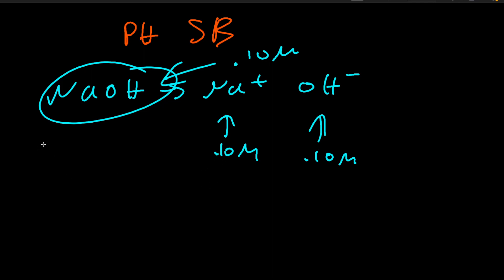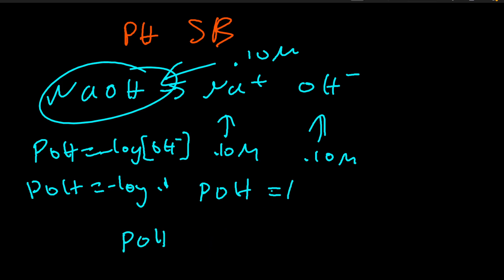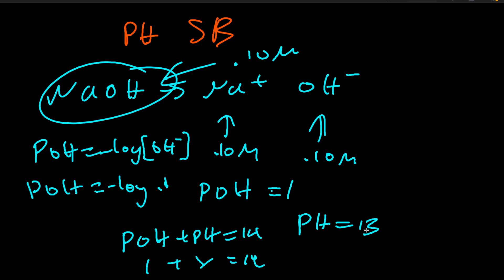So let's plug into the equation: pOH equals negative log of [OH⁻]. pOH equals negative log of 0.1, which equals 1. Once we find that, we use pOH + pH = 14. Plugging in 1 + pH = 14 gives pH = 13.